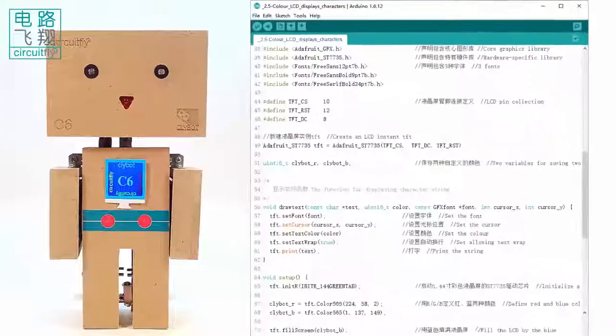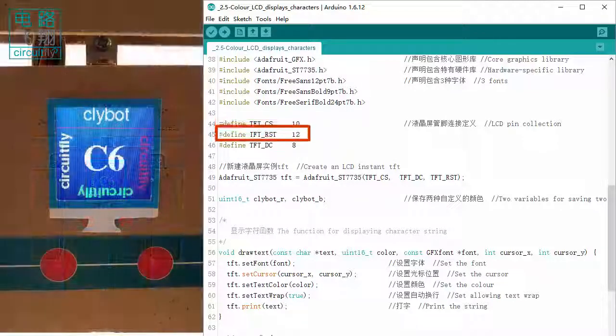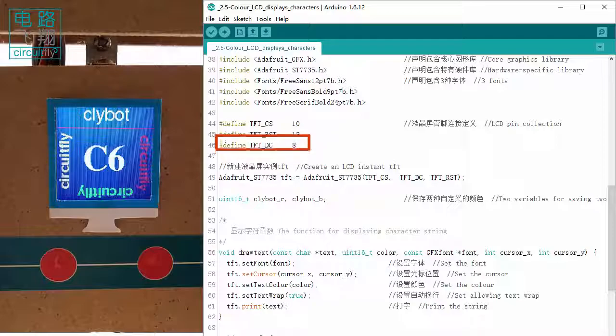The pin connections are defined at the beginning of the sketch for LCD applications: CS to Arduino pin 10, DC to pin 8, and RST to pin 12.